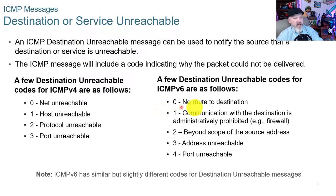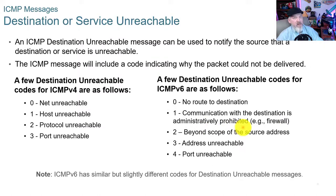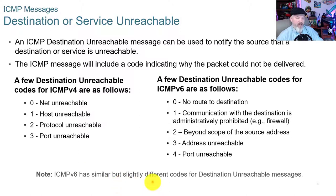On the v6 side: code 0 is no route to destination, similar to net unreachable; 1 is communication with the destination is administratively prohibited, meaning it's hitting a firewall; 2 is beyond scope of the source address; 3 is address unreachable; and 4 is port unreachable. V6 has similar but slightly different codes, and you'll need to know both for any CCNA testing.